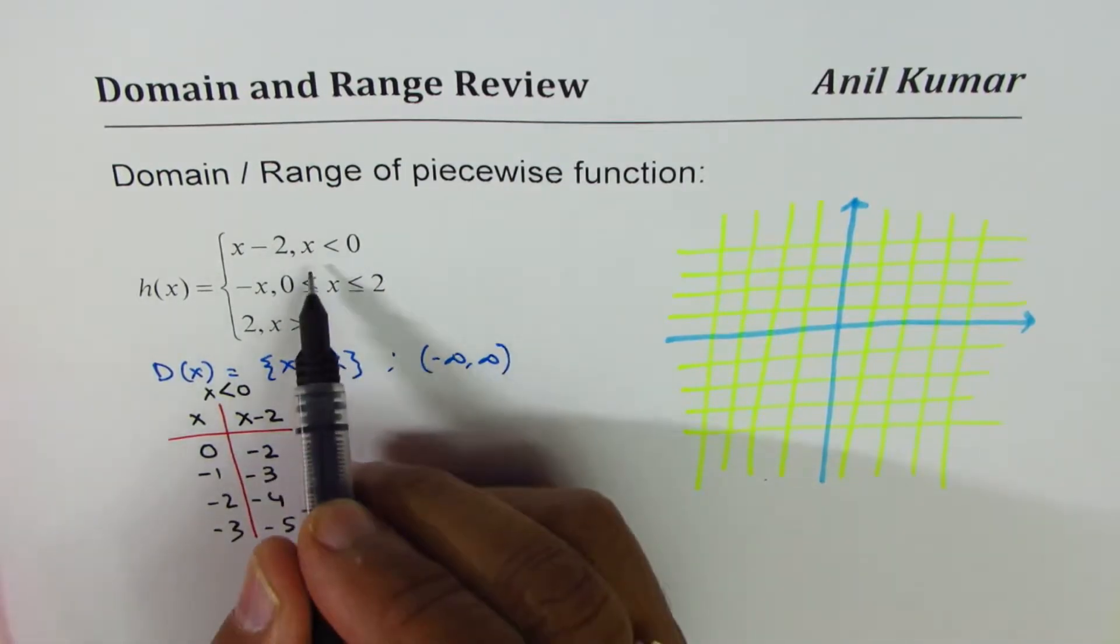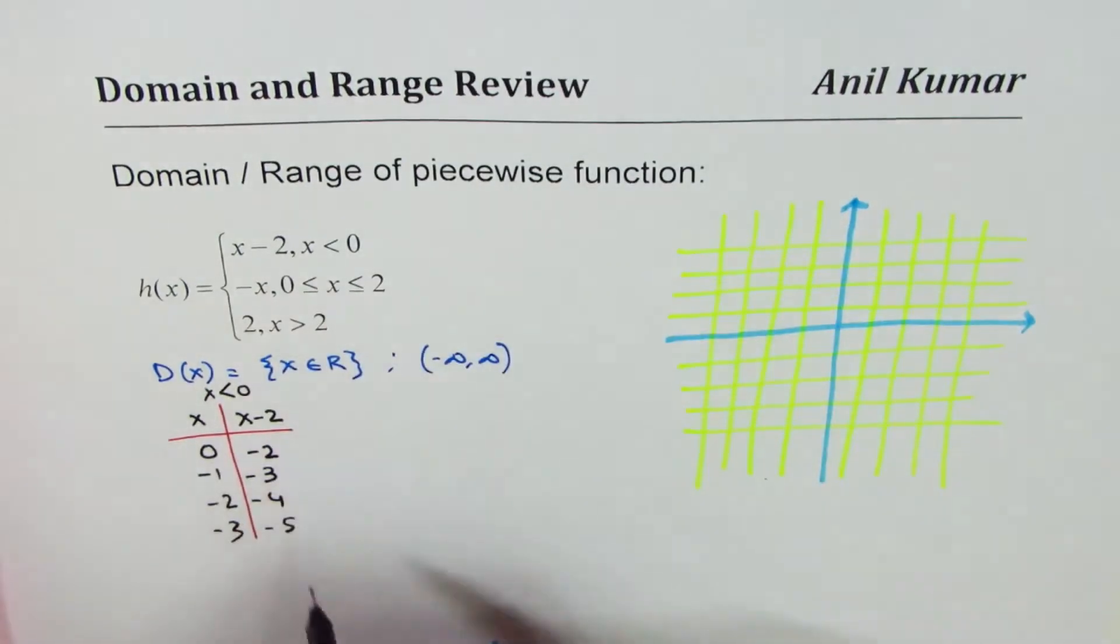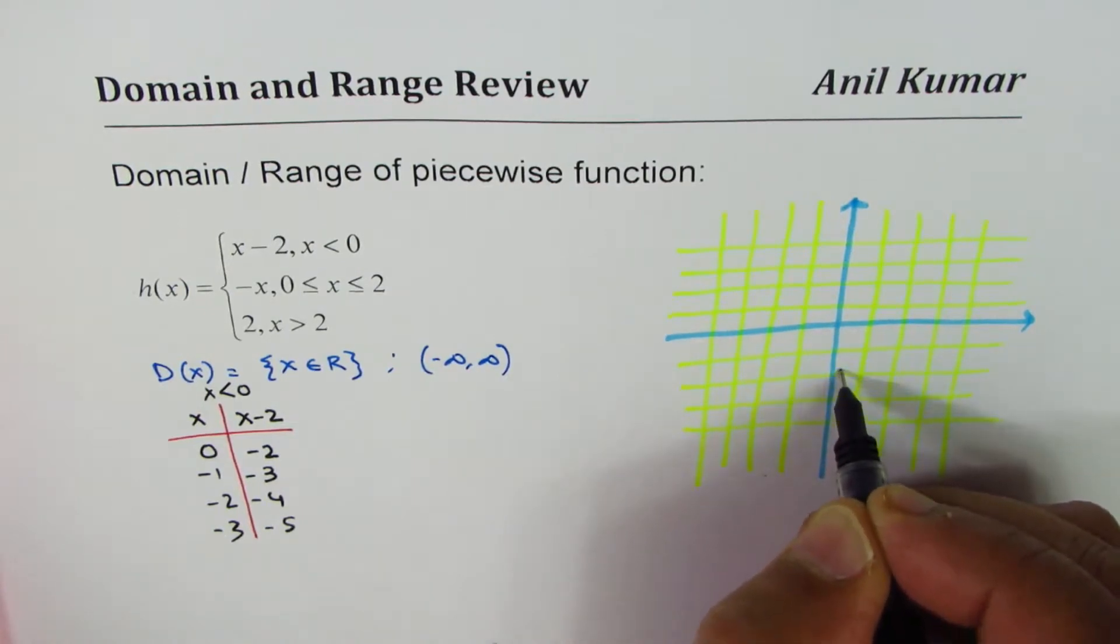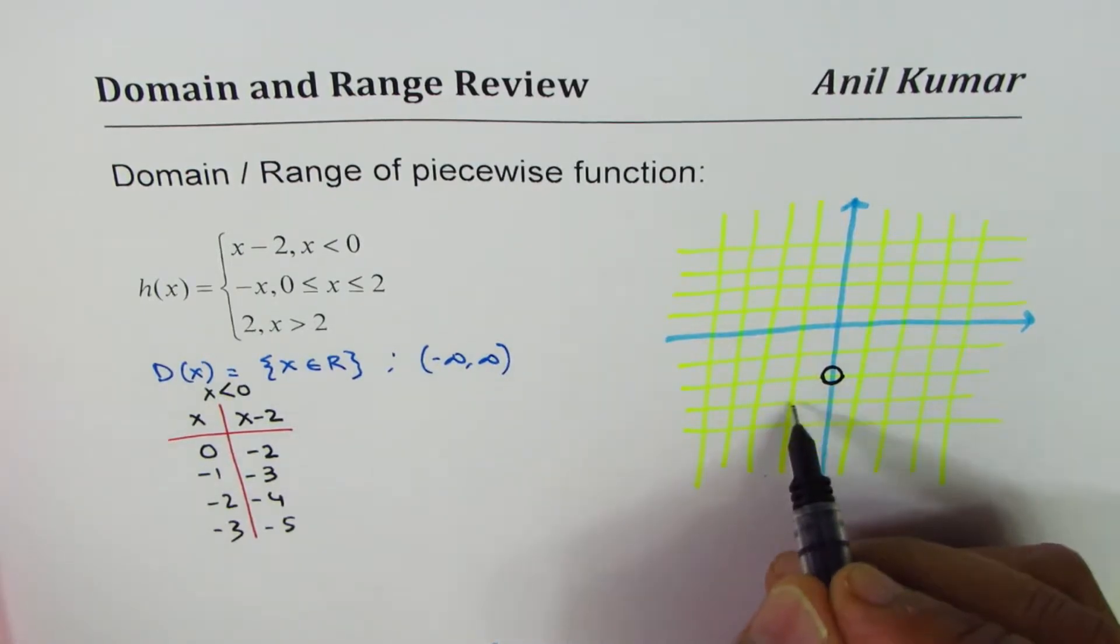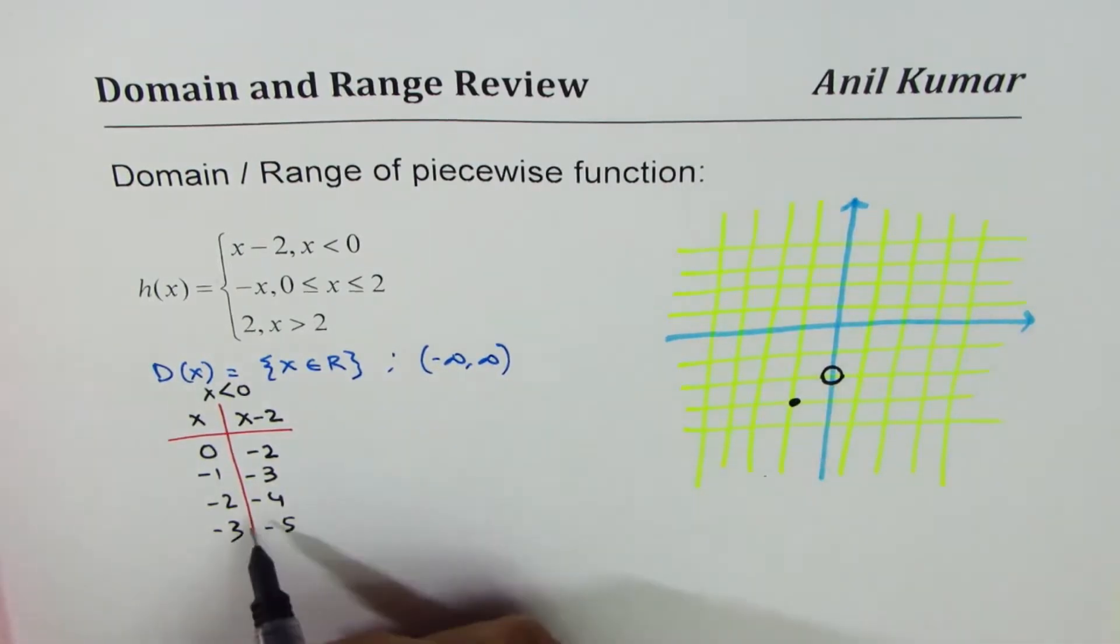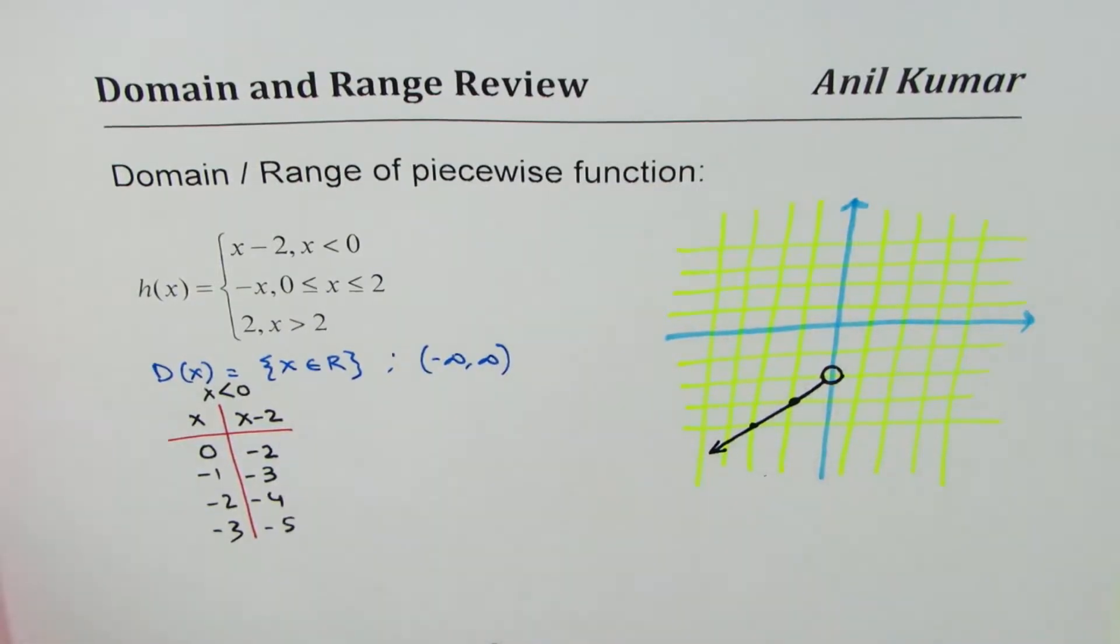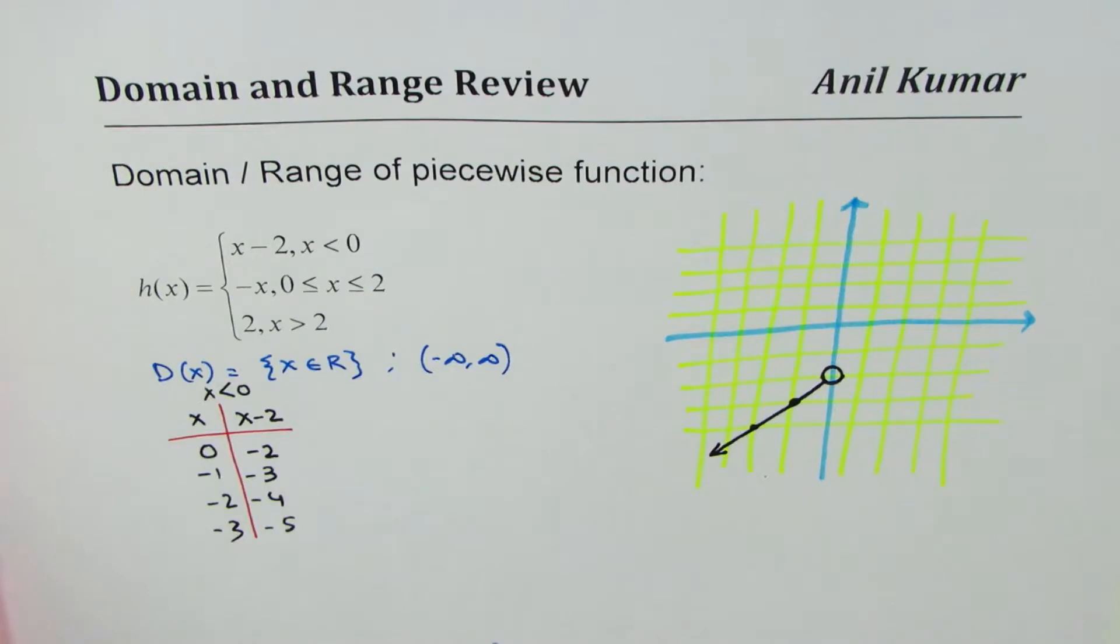0 minus 2 but this is not included, so that is open circle. So x value is 0, y is minus 2, 0 minus 2 open circle, do you see that? Then at minus 1 it is minus 3 closed circle, then it's minus 4, it's a straight line you can see so we can just connect them with a straight line.